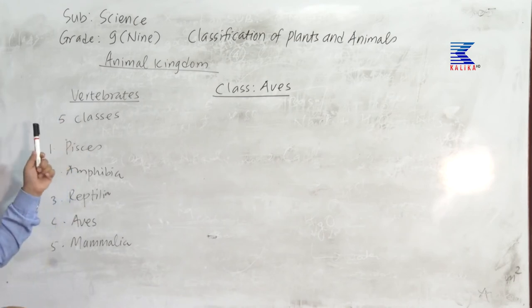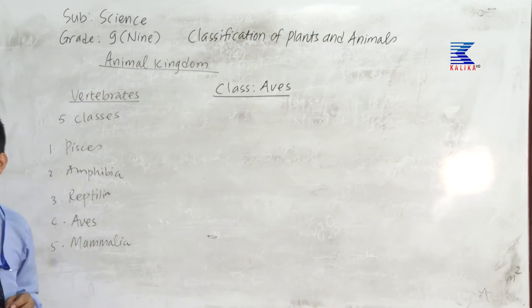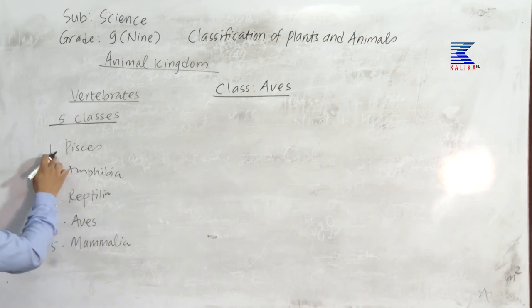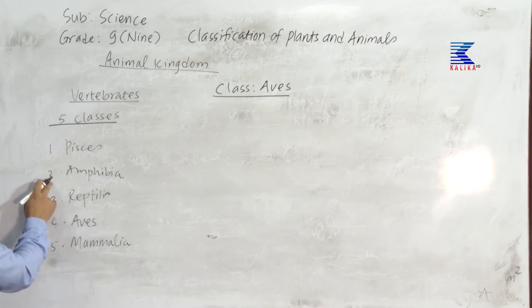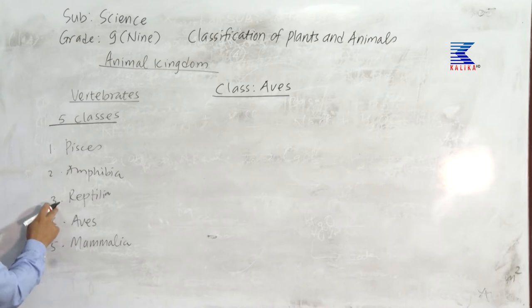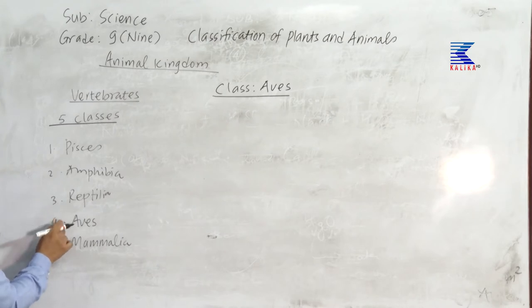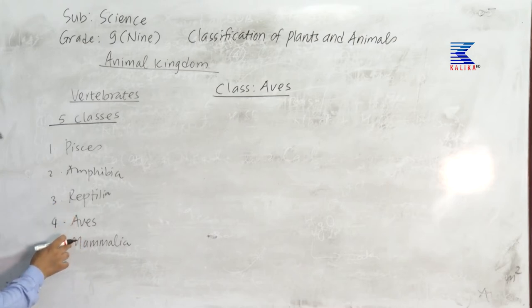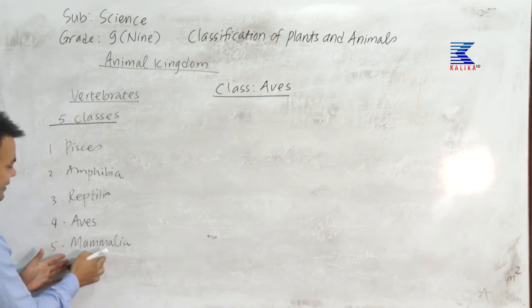I talked about the vertebrates — the subkingdom Vertebrata — classified into five classes. Class one: Pisces, belonging all the fishes. Amphibia, belonging the toads and frogs. Likewise, Reptilia, all the crawling animals including snakes, tortoise, turtles, lizards, etc. Number four, class Aves, where all the birds belong. And number five, Mammalia — all the mammals included in the fifth class.